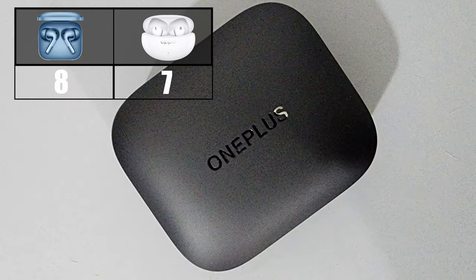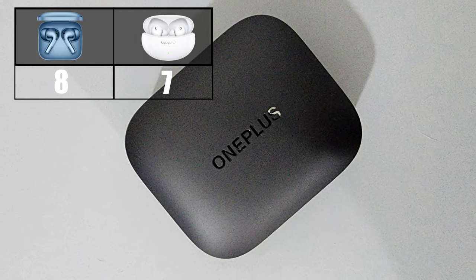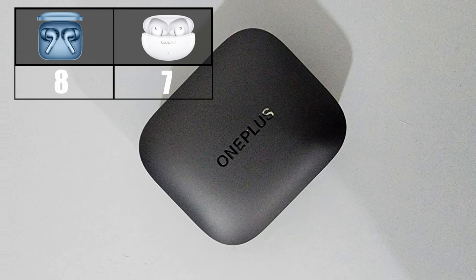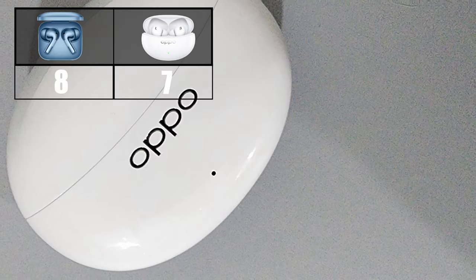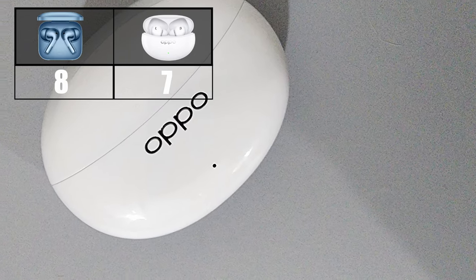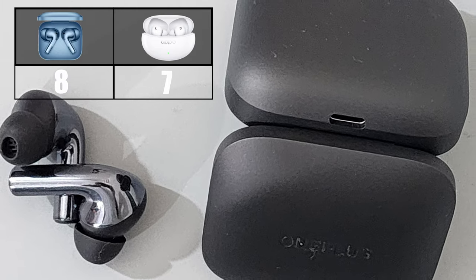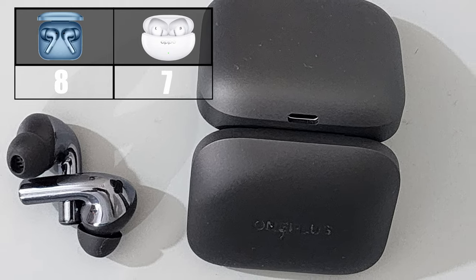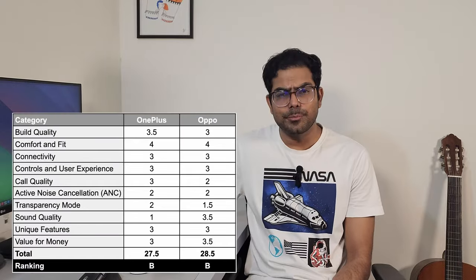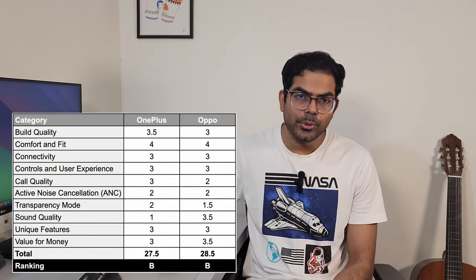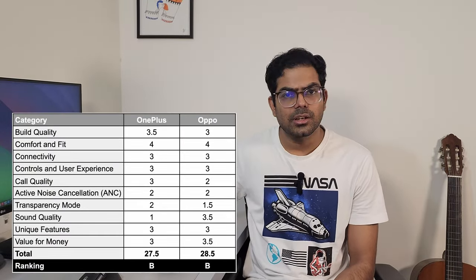So now the verdict. It was definitely a very close call amongst the two. OnePlus emerged as the winner in 8 categories against the Oppo which won in 7 categories. For me, Oppo is a better choice if you want an overall package with good sound. However, OnePlus is a better package if sound quality is not a priority for you. So I have my own ranking system and in my ranking system, both comes as B tier and in B tier, Oppo lead by 1 point against OnePlus. Here's the ranking for both of these.